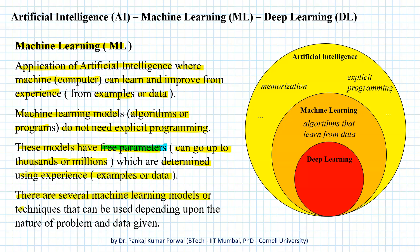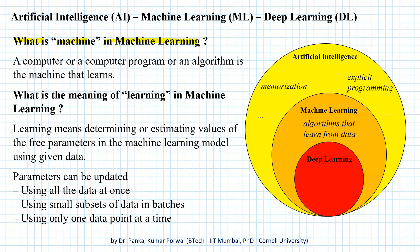There are several machine learning models or techniques that can be used depending upon the nature of the problem and the type of data available. The machine in machine learning is nothing but a computer, a computer program, or an algorithm. Learning means determining or estimating values of the free parameters using the given data. These parameters can be updated using all the data at once, or using small subsets in batches — also called batch learning — or using each individual data point at a time, which is called stochastic learning.